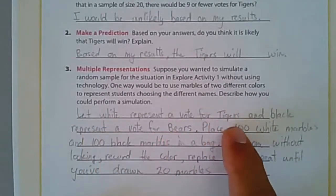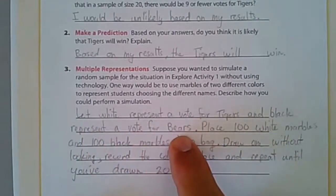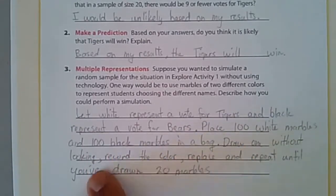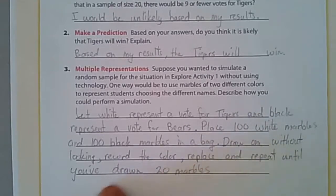Well, here's an idea. You could let white represent a vote for Tigers and black represent a vote for Bears. Place 100 white marbles and 100 black marbles in a bag. Draw without looking, record the color, and then replace that marble and repeat until you've drawn 20 marbles.